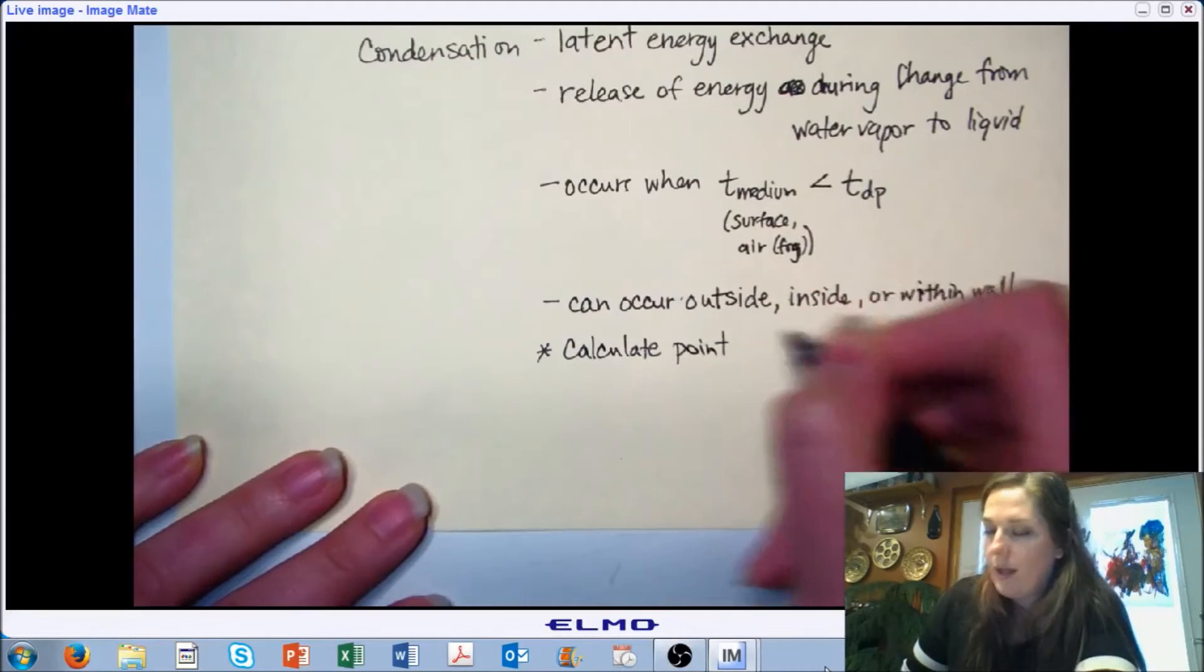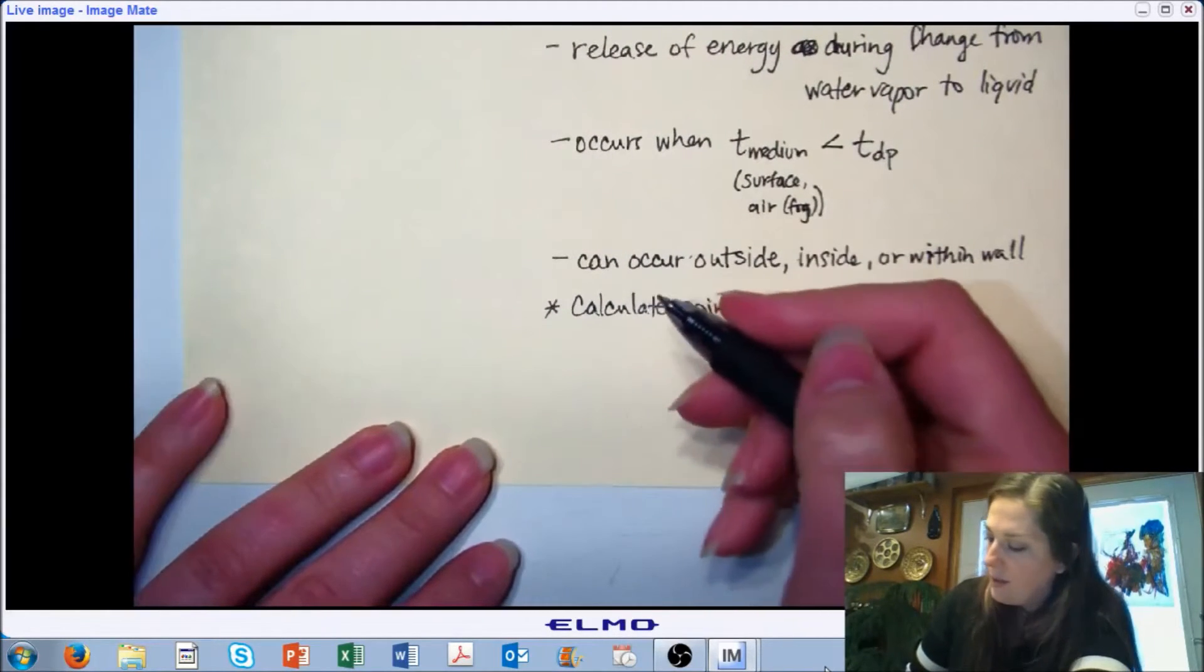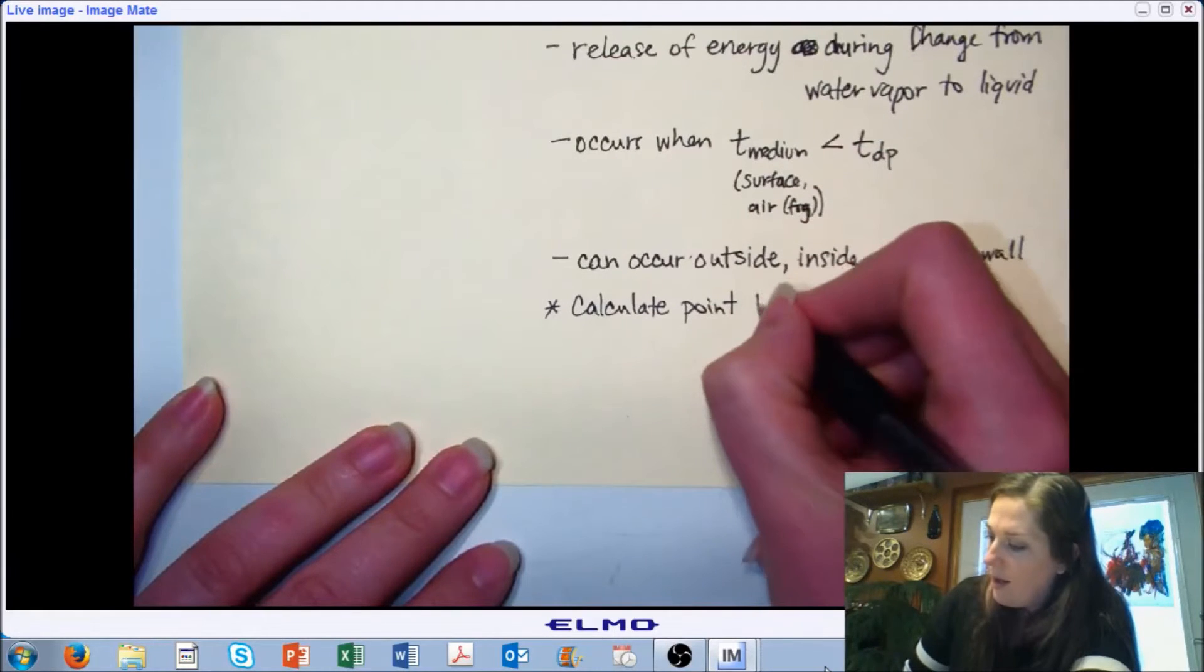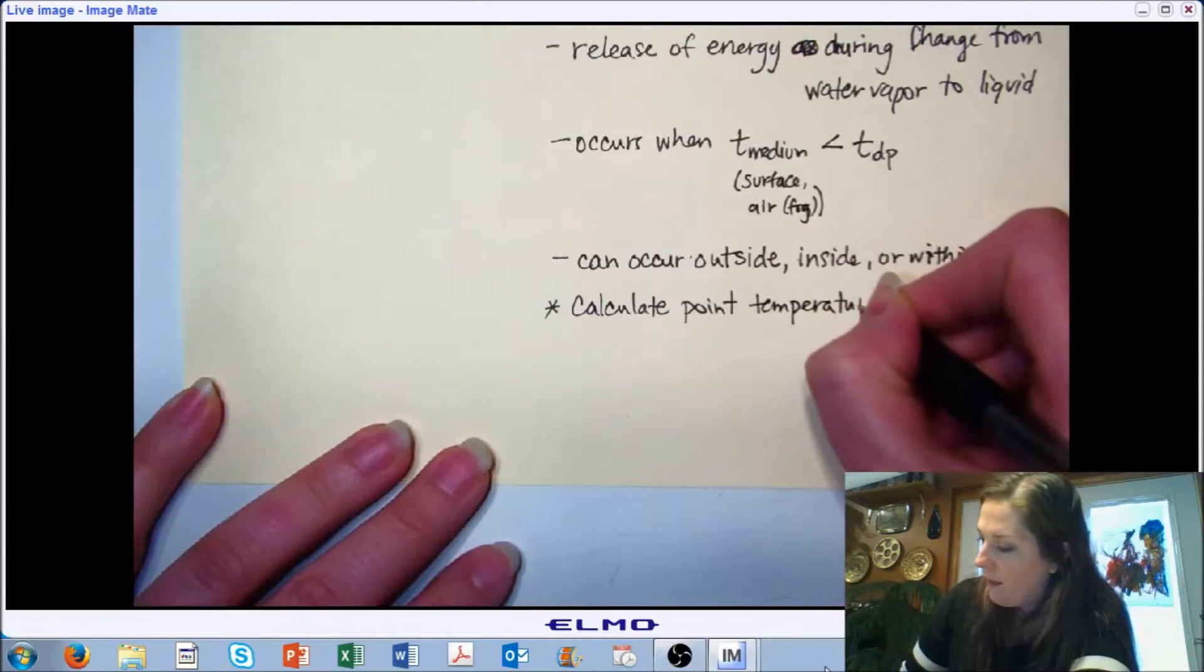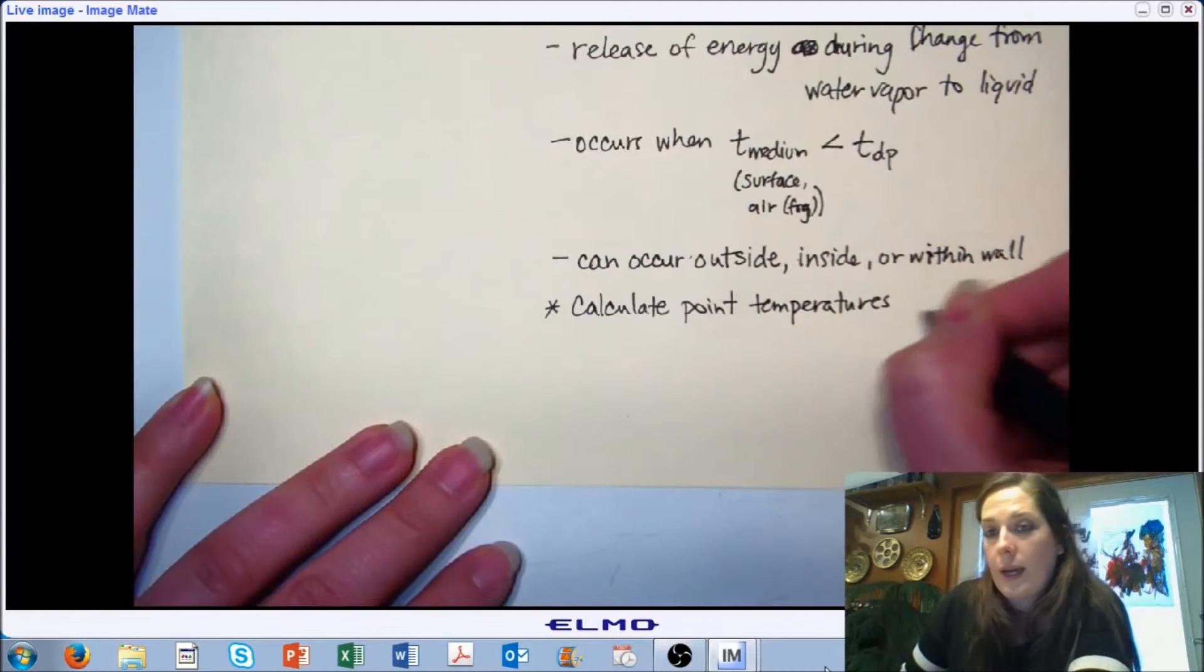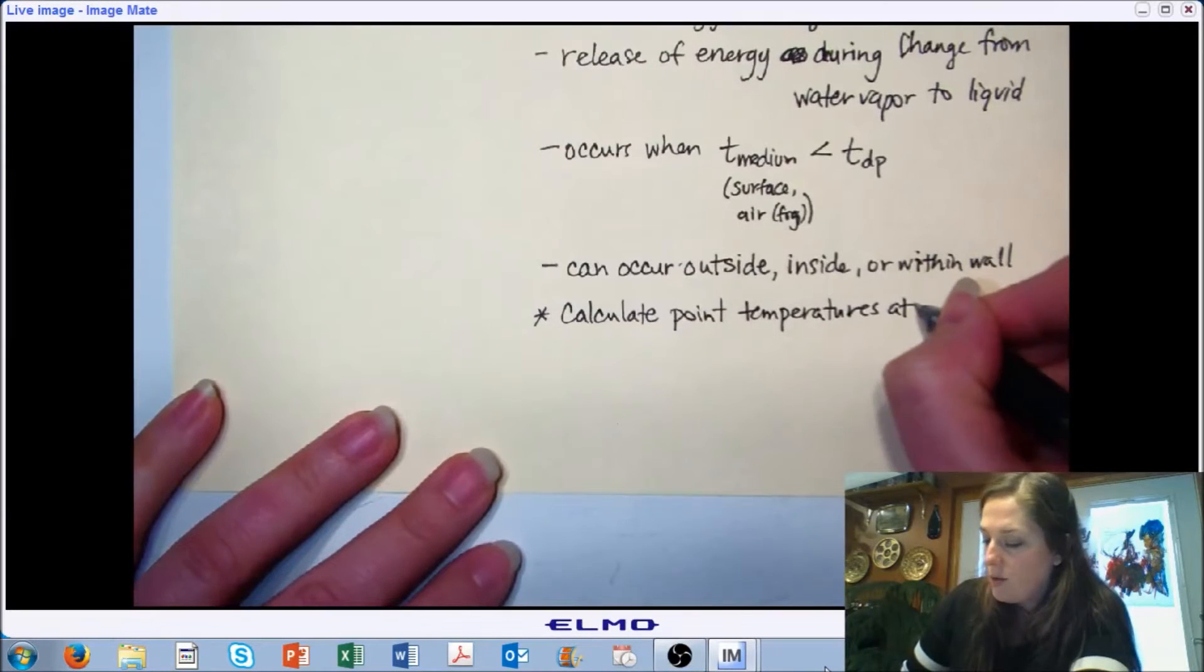The way that we determine where our condensation is happening, we can kind of look at our analogous electrical circuit to point this out. But we can calculate point temperatures within our wall, anywhere within our wall. But typically we want to do it at each wall interface because that's an easy, logical place to do it.